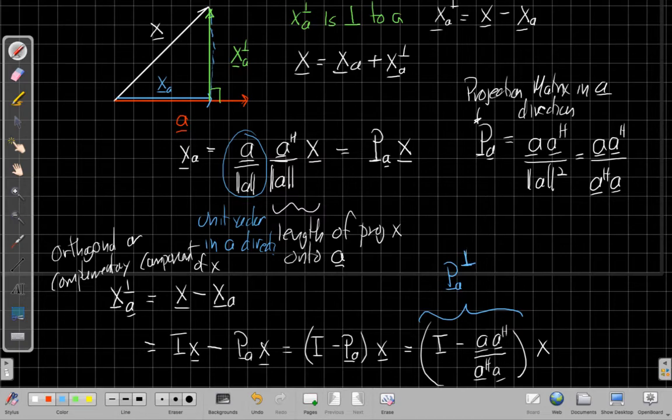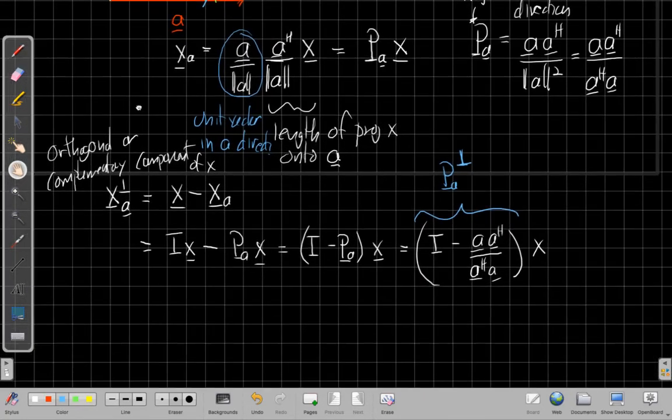And this, again, also shows up often enough that it gets a name that we call this matrix the orthogonal projection or the complementary projection. So it's P sub a, again, with that right angle bracket as a superscript.